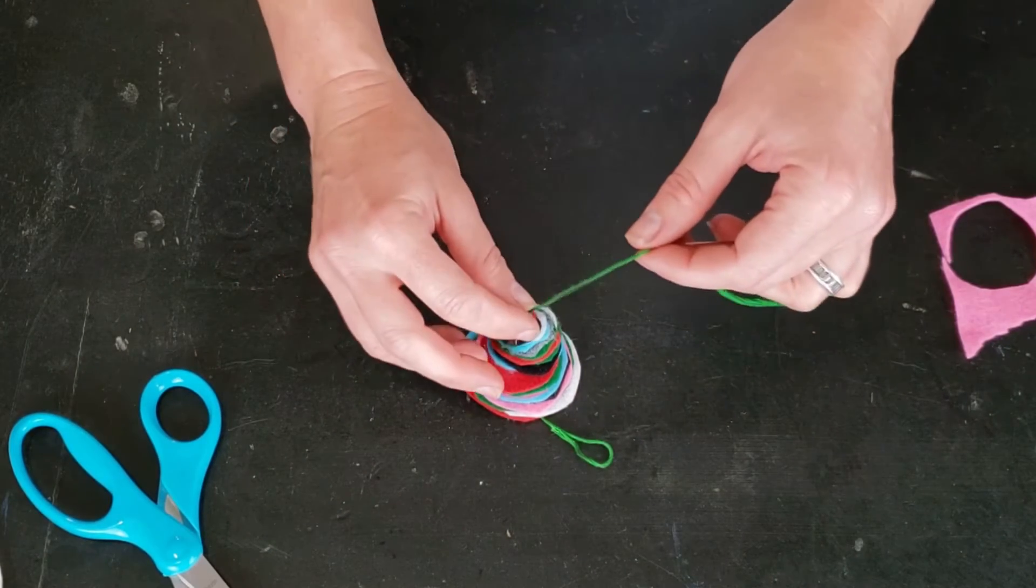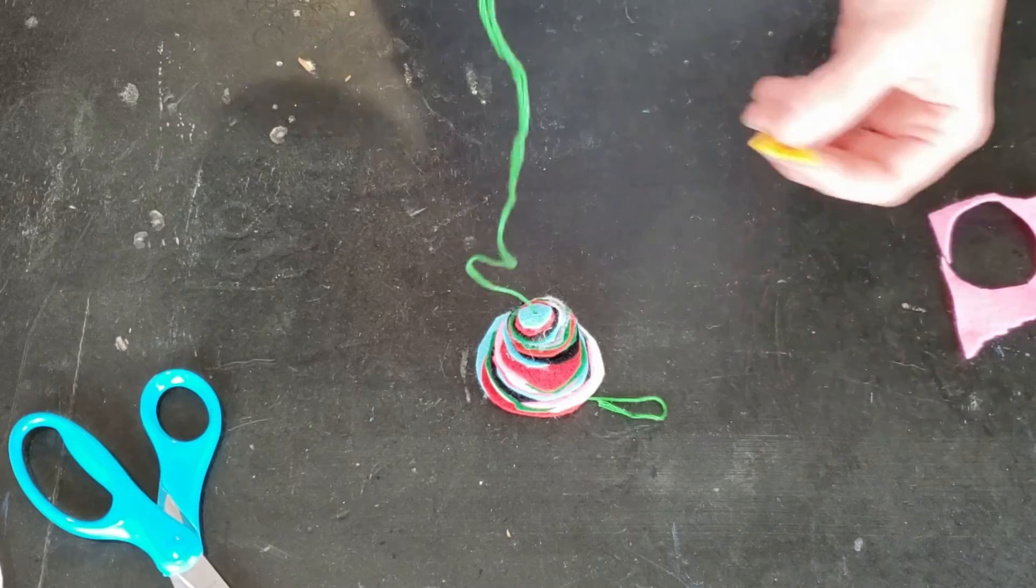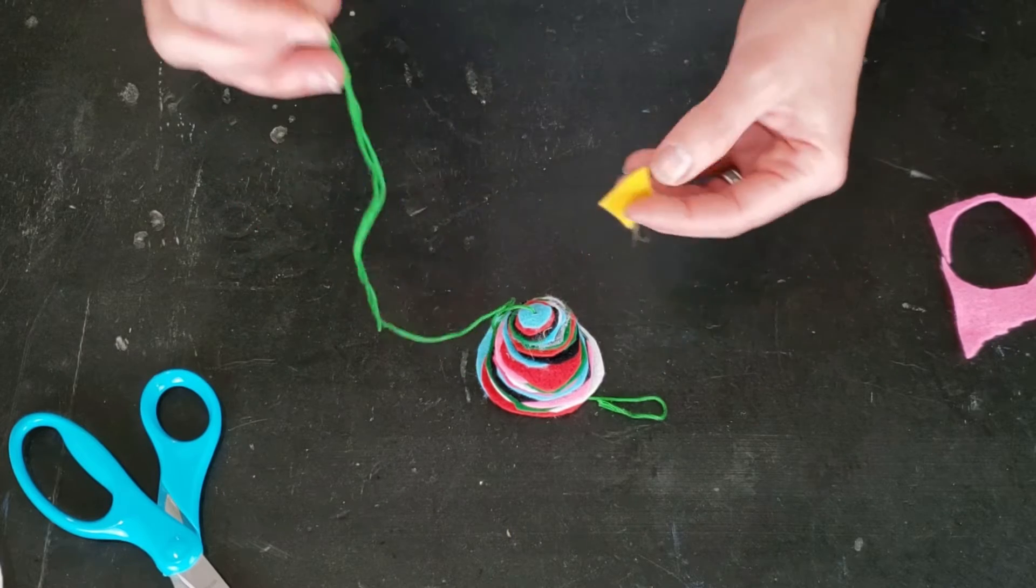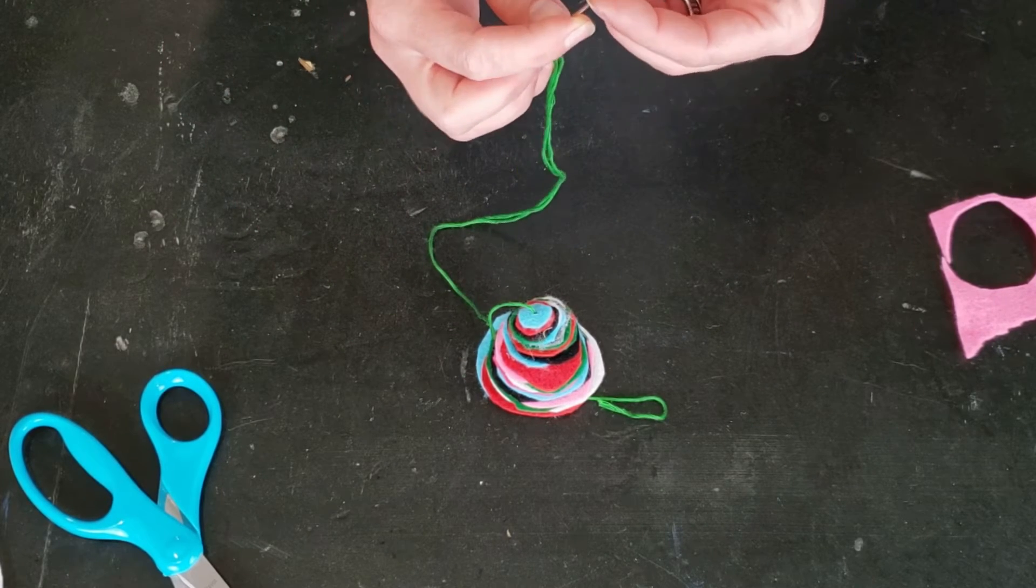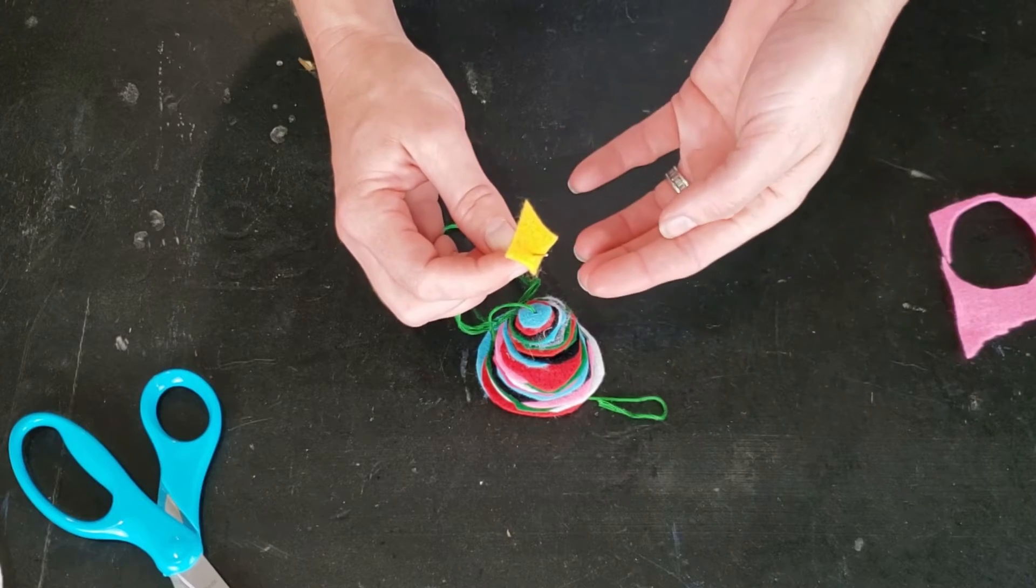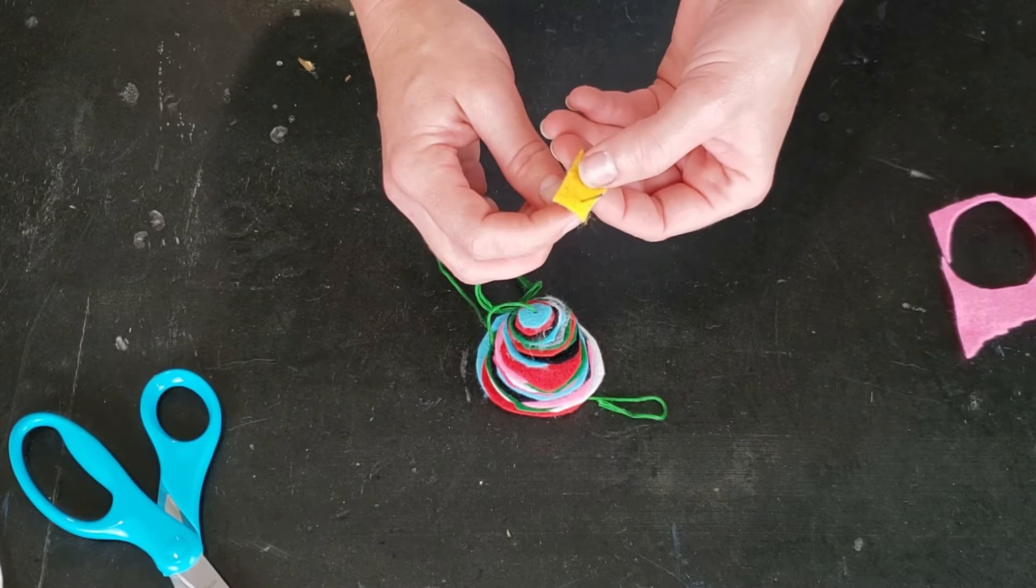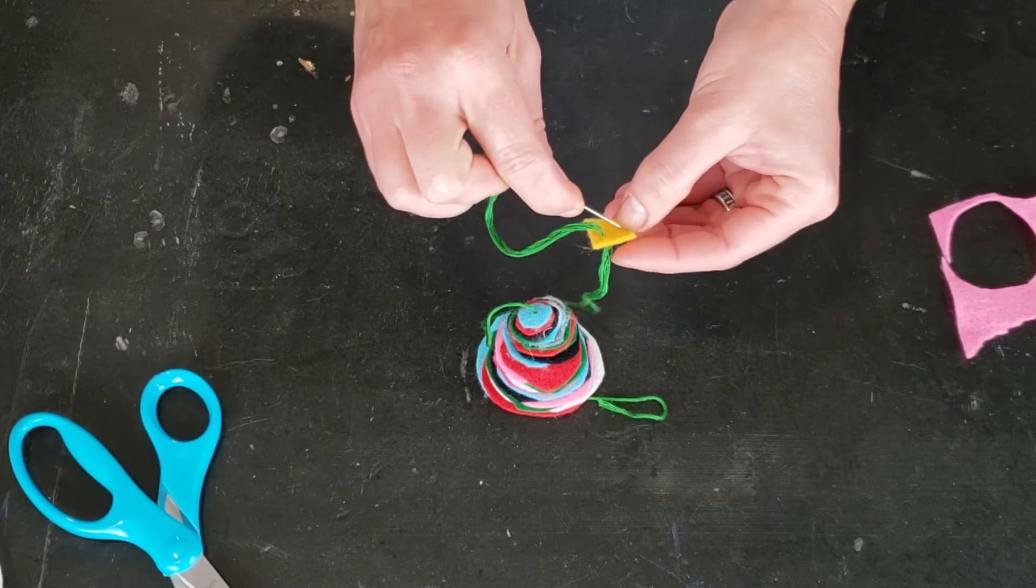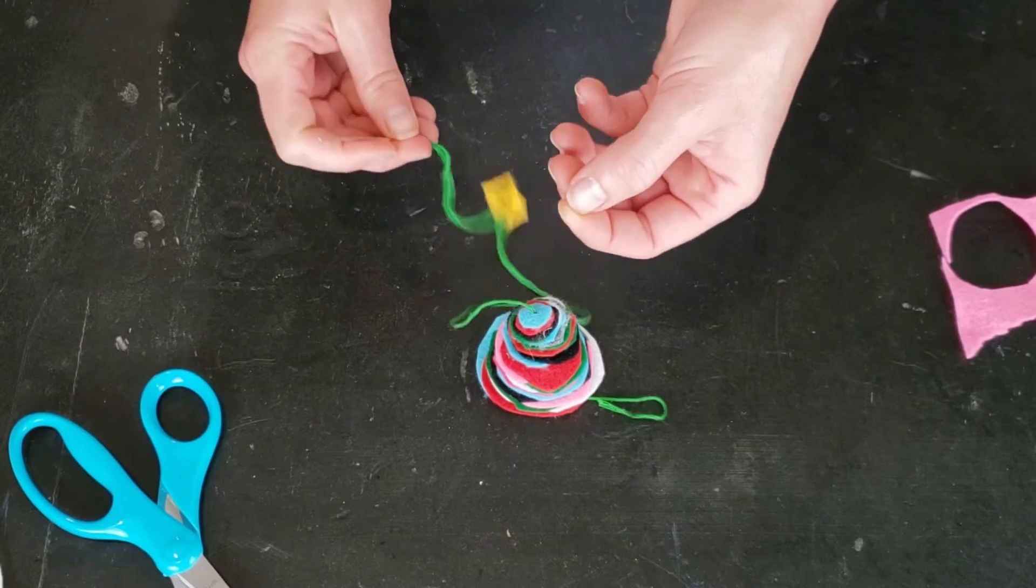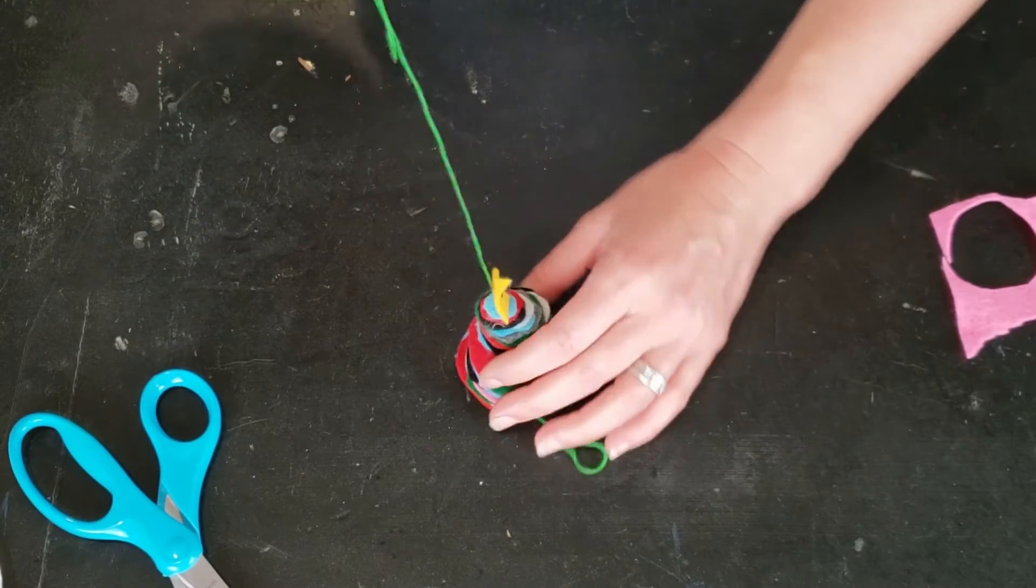Once you have your tree all stacked, you can add a star to the top if you want. Mine is just sort of a little diamond shape, a little wibbly wobbly again to go with my circles that are not quite perfect. But if you want, you could trace a star. If you have a star punch, you could use something like that or a stencil to create your shape. I'm just going to go up through the side of that and then down through the top area. This will allow it to sort of stand up on top of my tree like that.